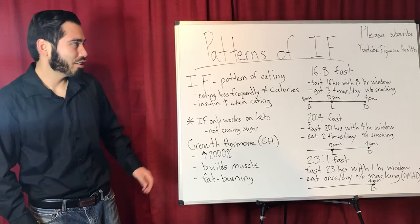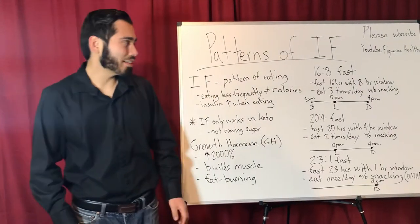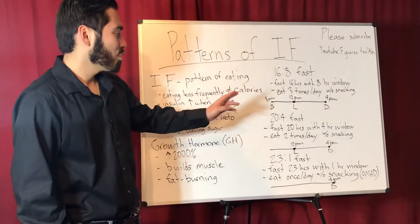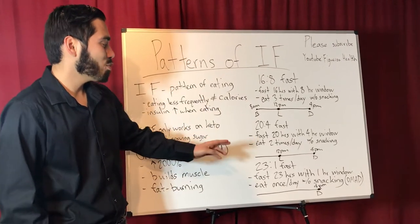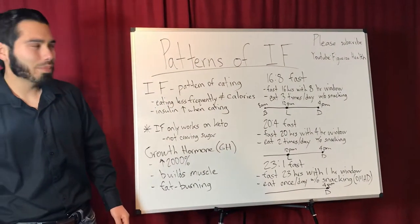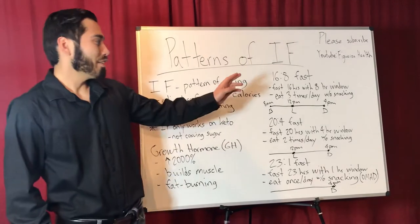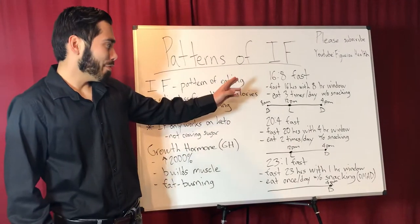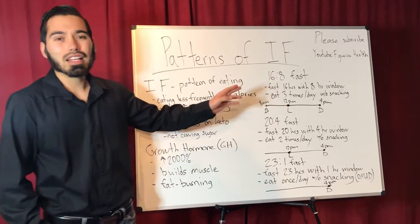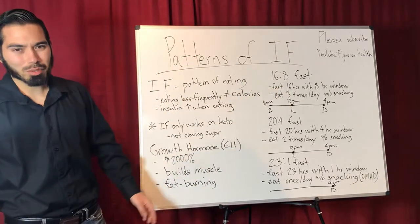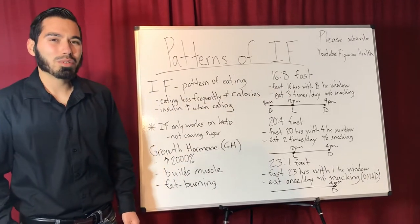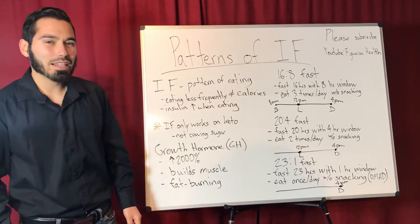The patterns of intermittent fasting are: a 16 to 8 hour fast, a 20 to 4 hour fast, and a 23 to 1 hour fast. The 16 to 8 hour fast means that you're fasting for 16 hours within an 8 hour eating window — it's equivalent to someone eating three times a day without snacking.